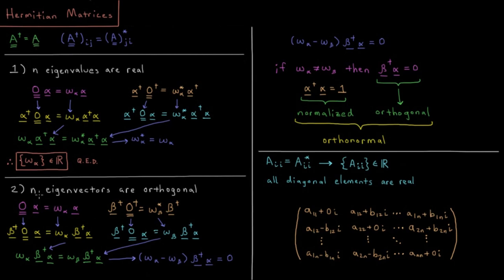Property number two: we can show that the eigenvectors are orthogonal. There are going to be n different eigenvectors with n different eigenvalues, and all of those eigenvectors are going to be orthogonal to each other. We have O alpha equals omega alpha as the eigenvalue equation. We take the adjoint of O acting on a different eigenvector beta, giving beta dagger O dagger equals omega beta star times beta dagger. We then left-multiply by beta dagger on both sides.